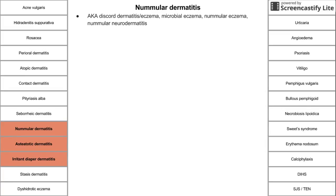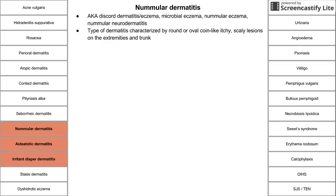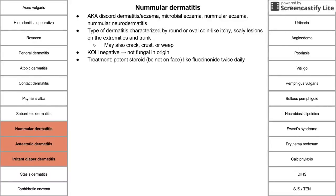Nummular dermatitis is characterized by round or oval coin-like itchy scaly lesions on the extremities and trunk. These lesions may also crack, crust, or weep. This is not a fungal disorder, unlike seborrheic dermatitis, so KOH would be negative. Treat with a potent steroid applied twice daily, since it usually appears on the trunk and extremities rather than the face.